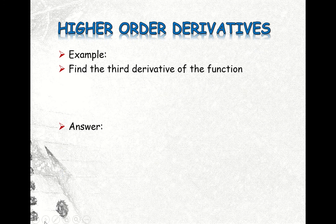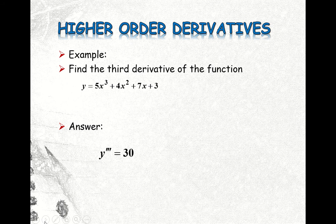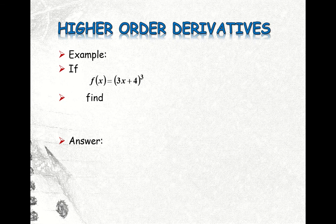We're done with that, so we'll go directly to the examples. Taking the derivative — y prime — applying the rule, then taking the derivative again for the second time gives the second derivative, and differentiating a third time gives y triple prime equal to 30. And if you're given f of x equal to 3x plus 4 raised to the power 3, then f triple prime is equal to 162. This is what we had discussed last time.